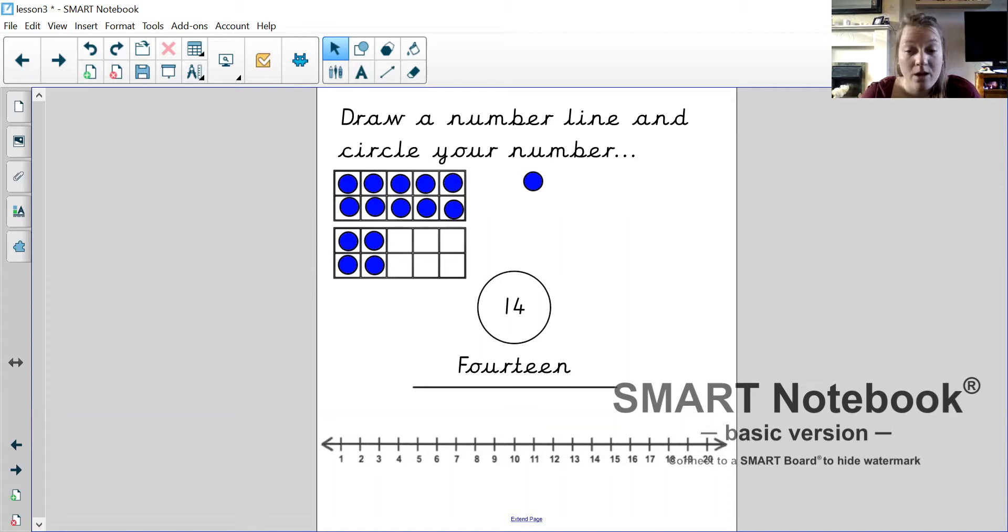Now some of you might struggle to fit this on one page. If you need to put this on a separate piece of paper, that's fine. Once you've finished your number line, can you put a circle around the number that you are showing me today? So I've put a circle around the number 14. Put a circle around the number that you are doing today.